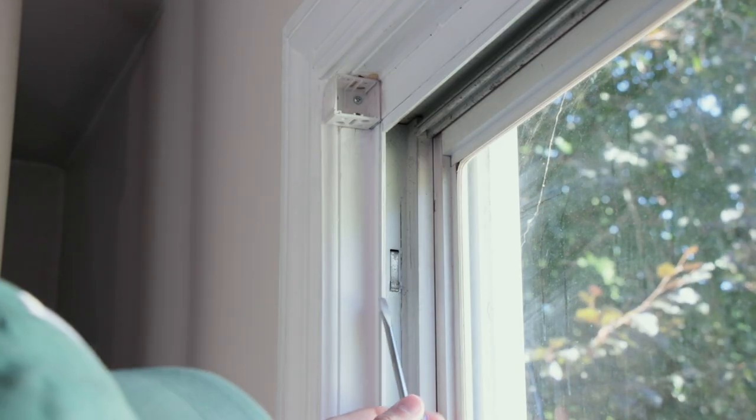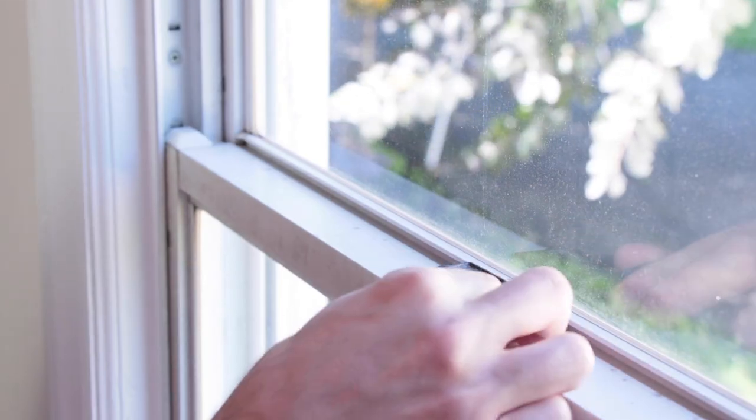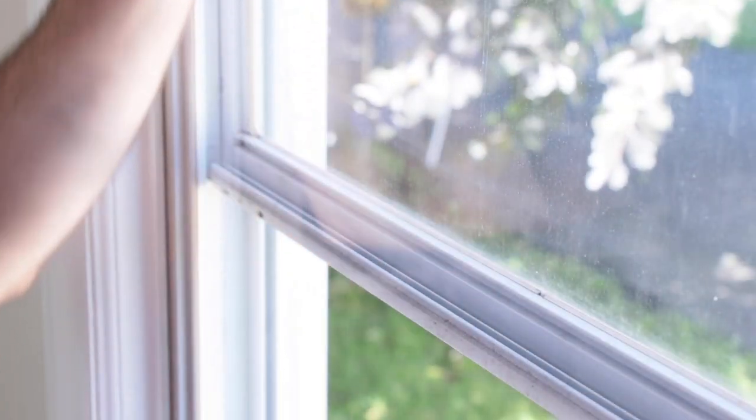The first step for this process is to pop out the takeout clips using your flathead screwdriver on the left and right side of the window. Make sure your window is unlocked and raise it up.